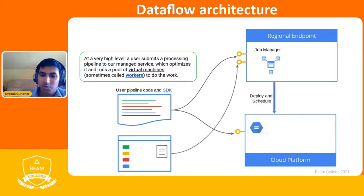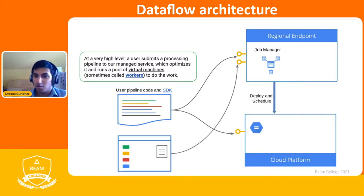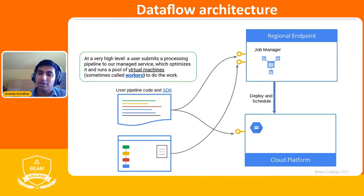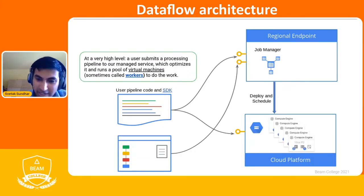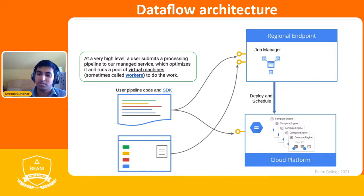Once you've submitted to your regional endpoint — also known as your primary worker — it is going to lease out work to your secondary workers. Your secondary workers are the ones actually doing the work, and like mentioned, they are all Compute Engine VMs.